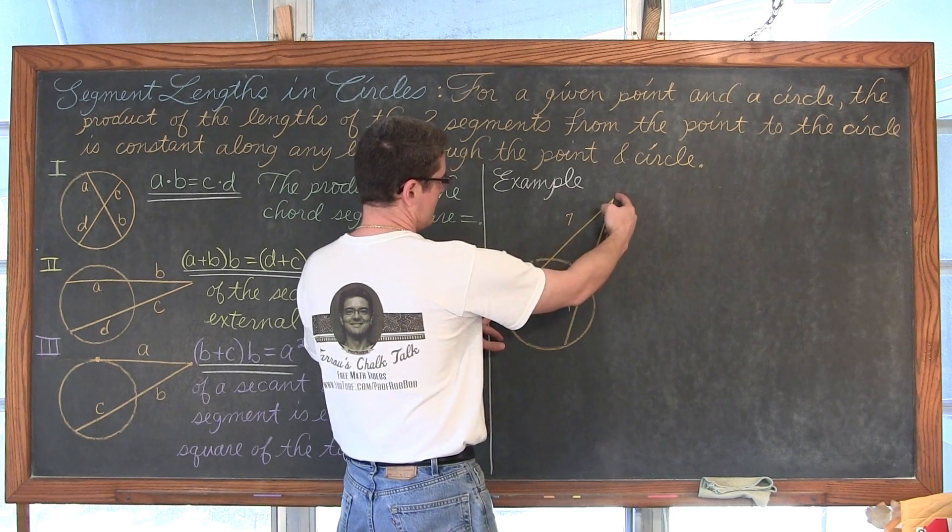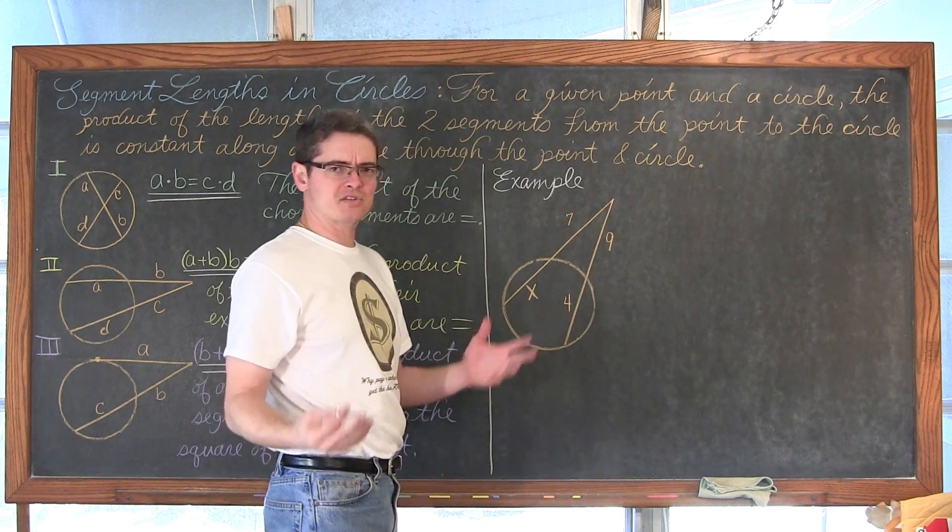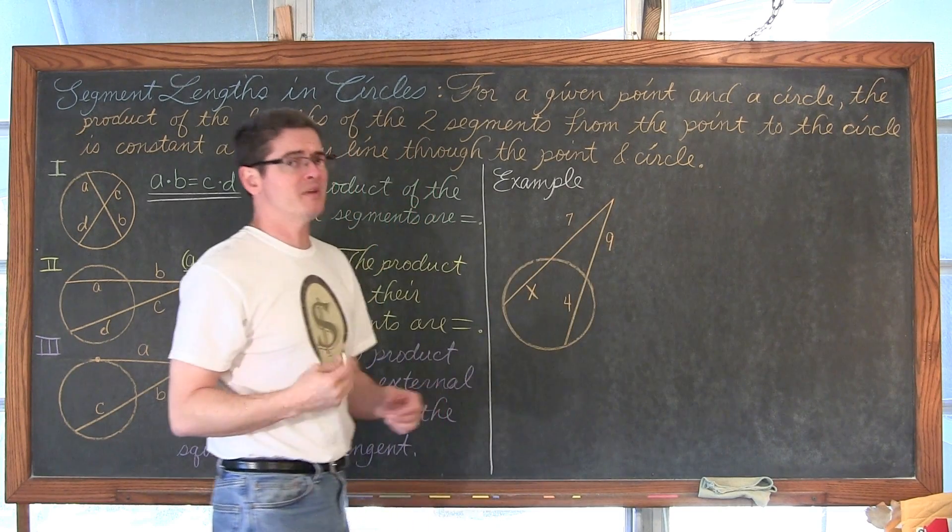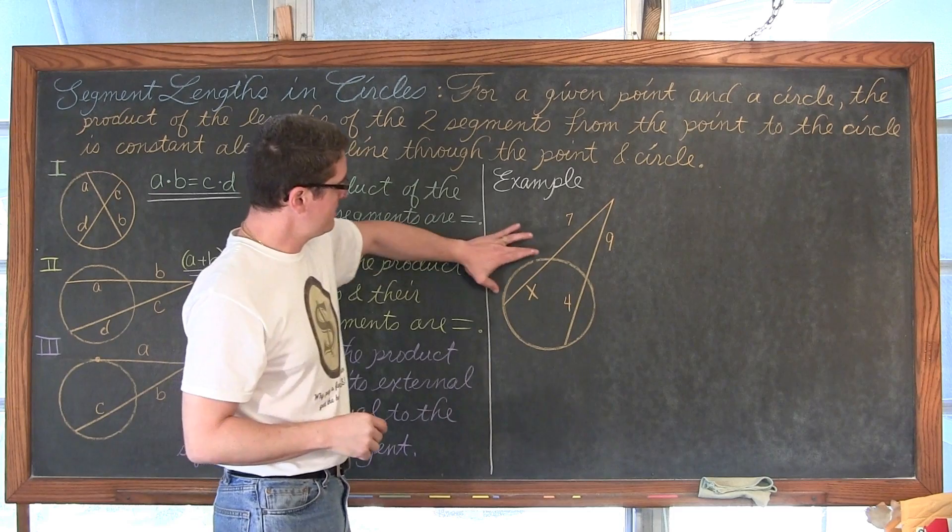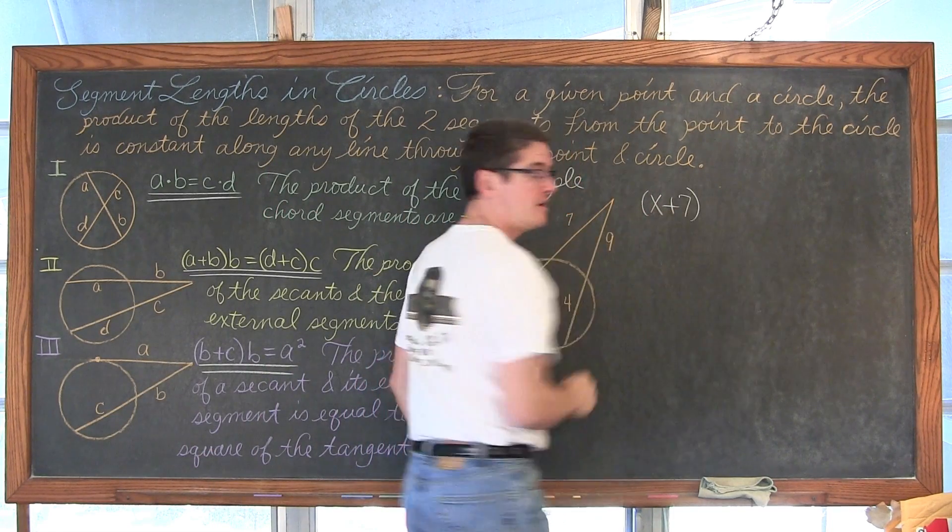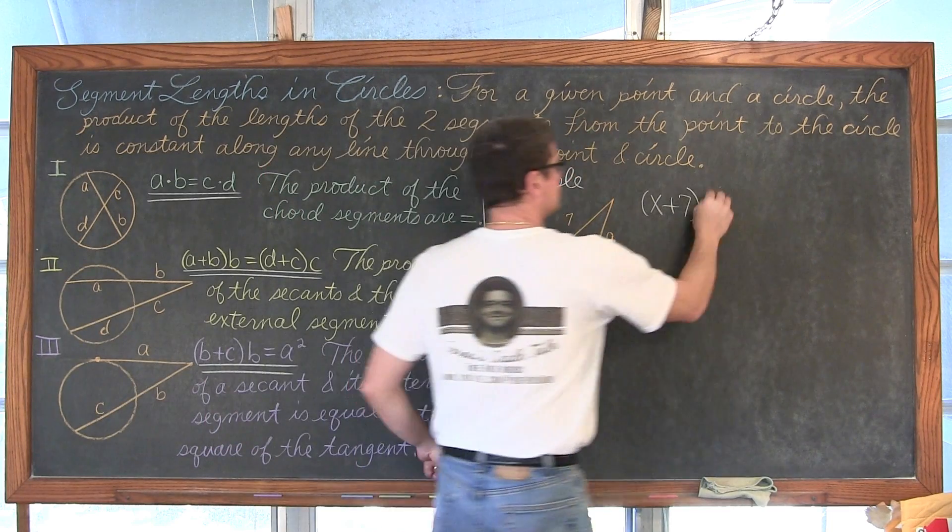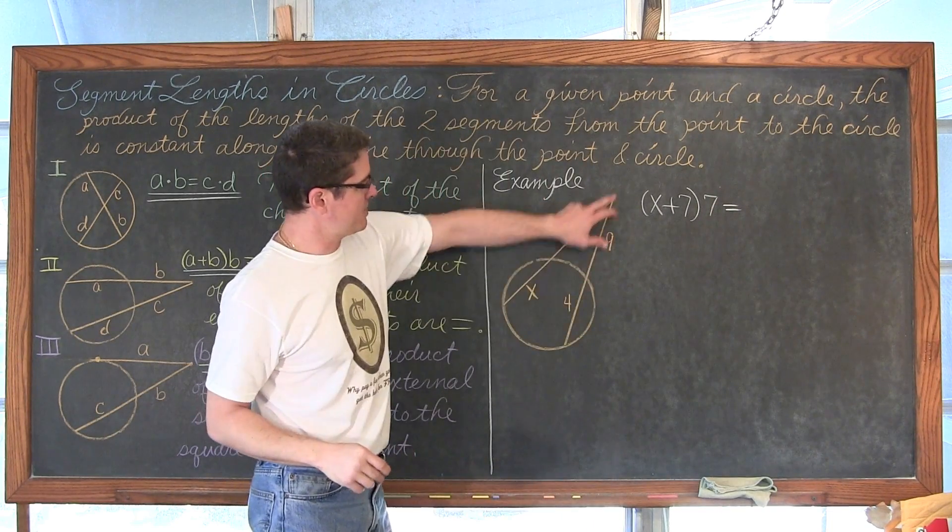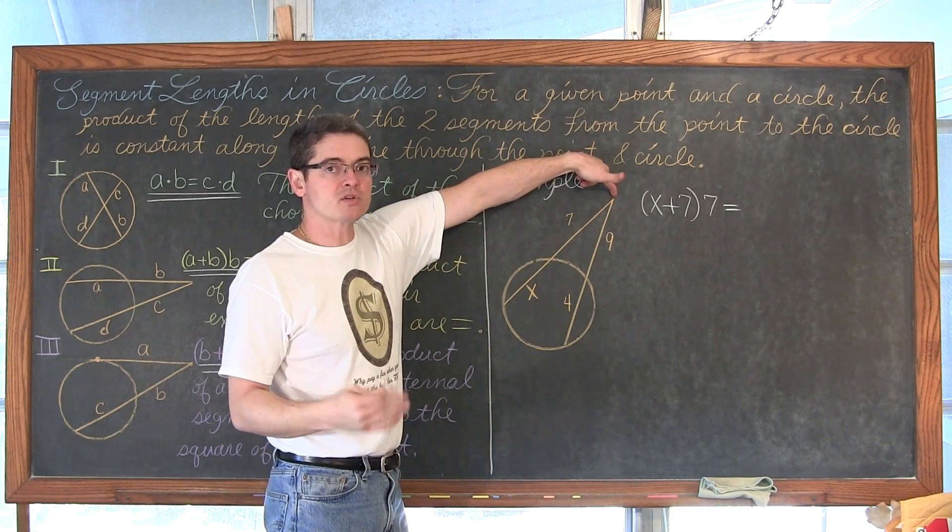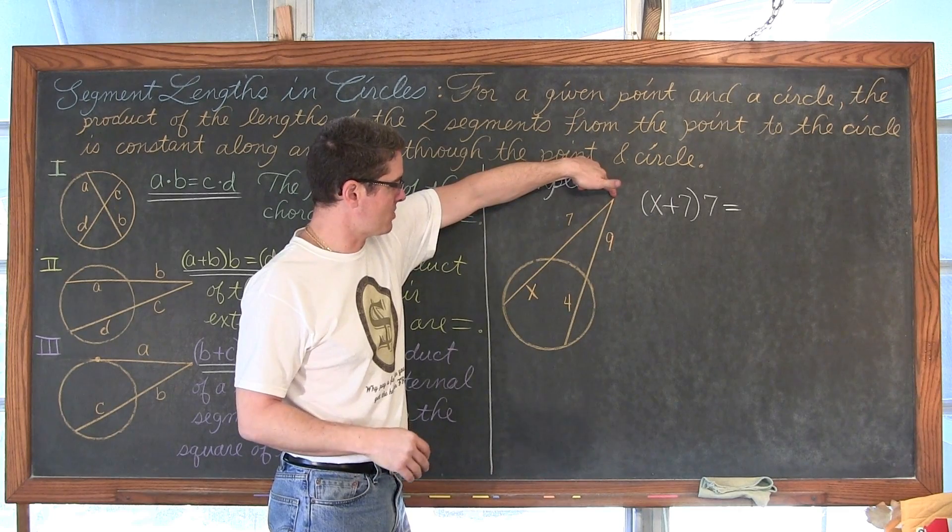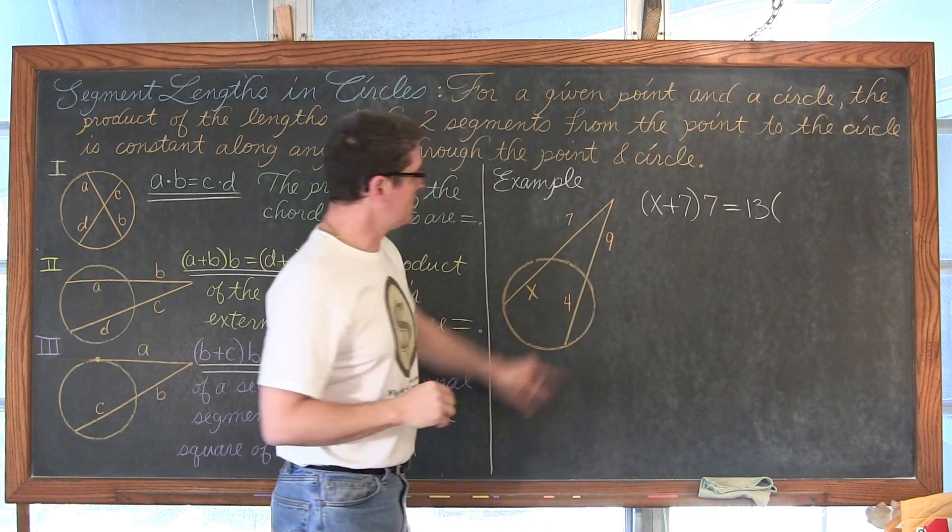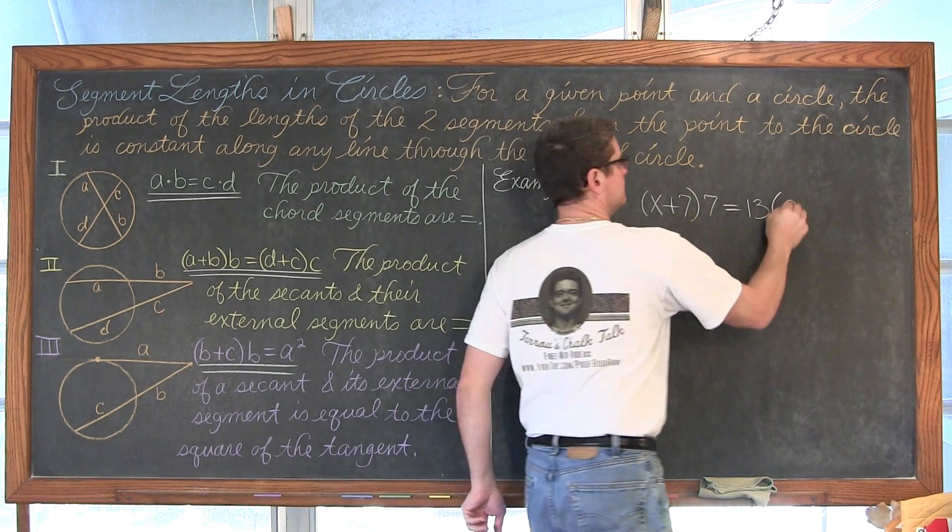Well, the second case here says that we are going to take the entire secant, multiply it by the external segment, and do that for both of these lines, and they are going to be equal. So we have the entire length of this secant, which is going to be x plus 7 times the external segment, which is going to be 7, is equal to the entire length of this other secant 13, 9 plus 4 is 13, times the external segment of 9.